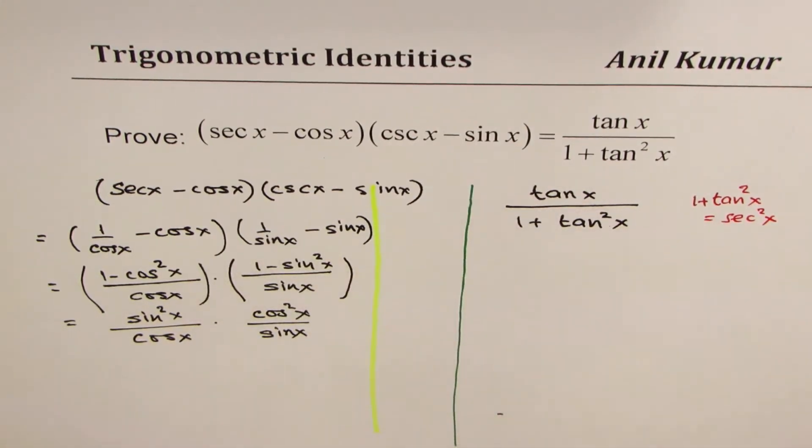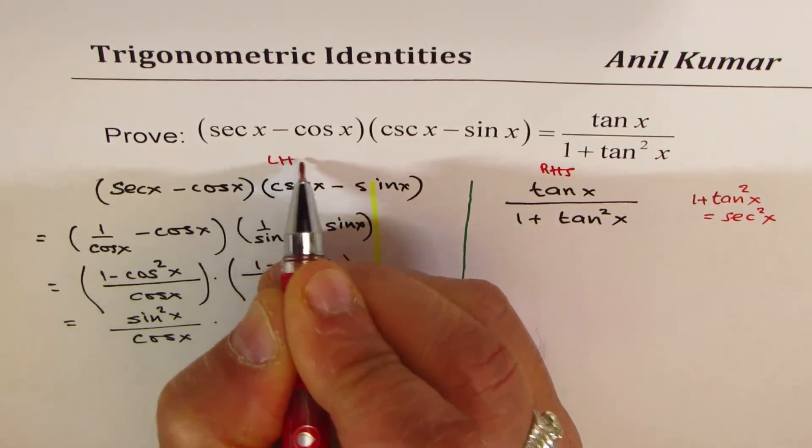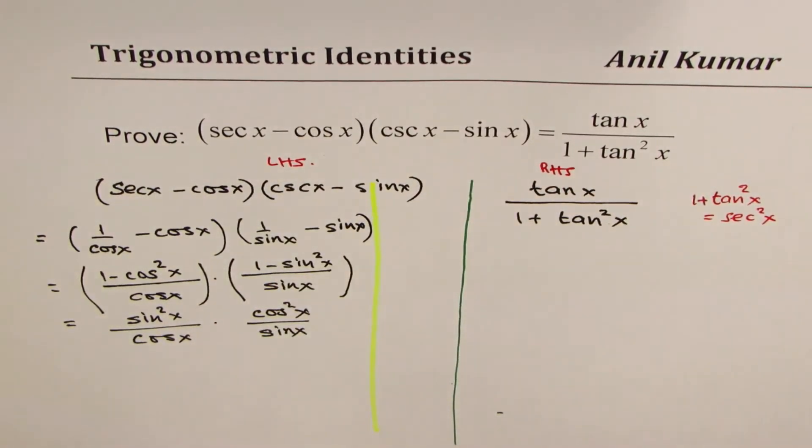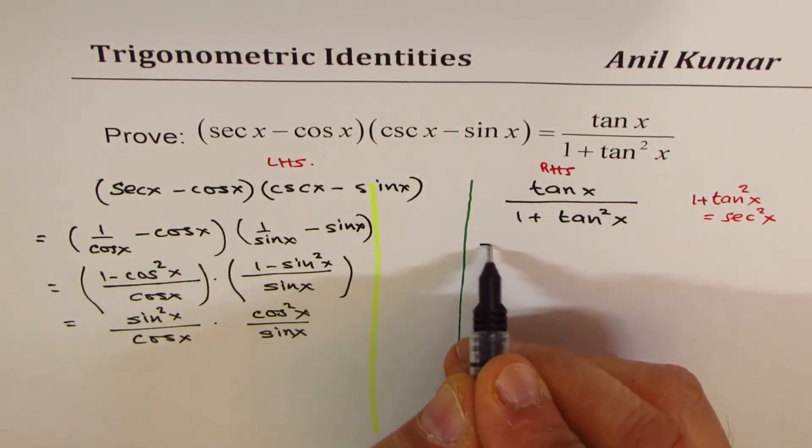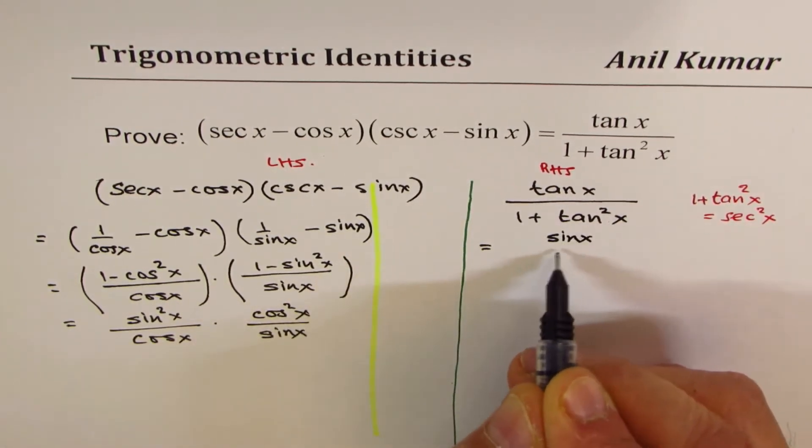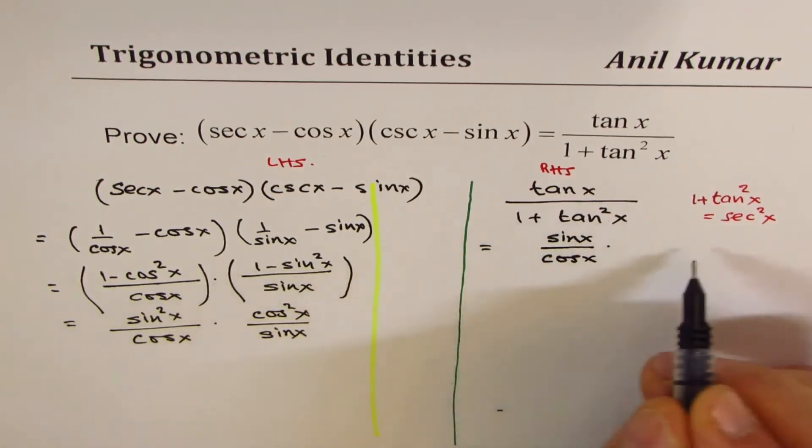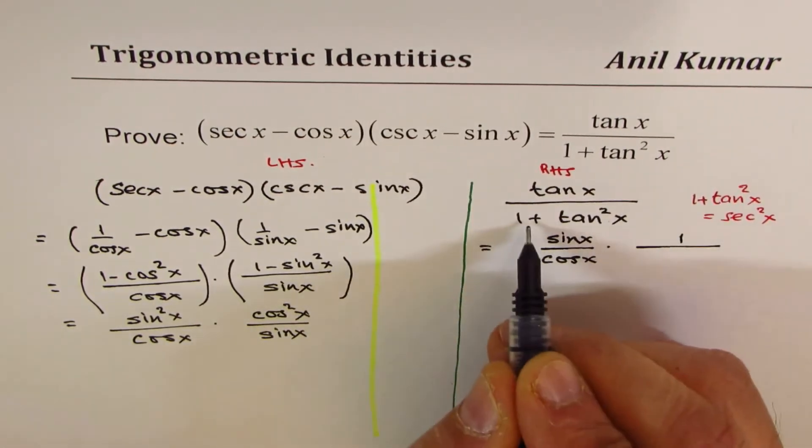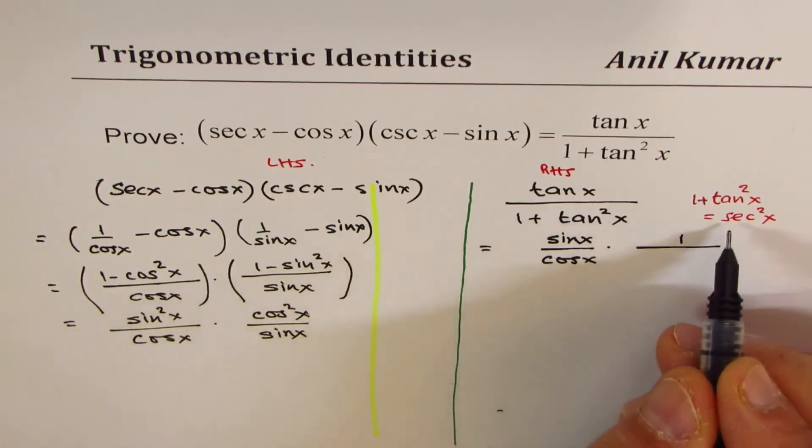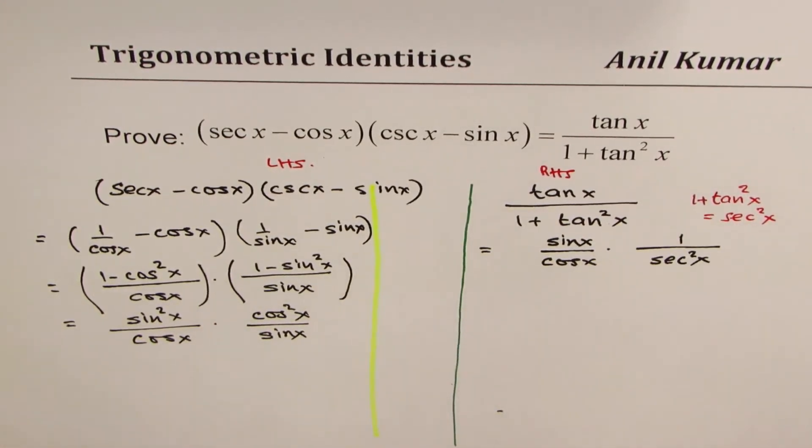Let me go down the right-hand side. Let's see where we can meet—that's the whole idea. tan x can be written as (sin x / cos x) times (1 / (1 + tan²x)). 1 + tan²x is sec²x. So we replaced 1 + tan²x with sec²x.